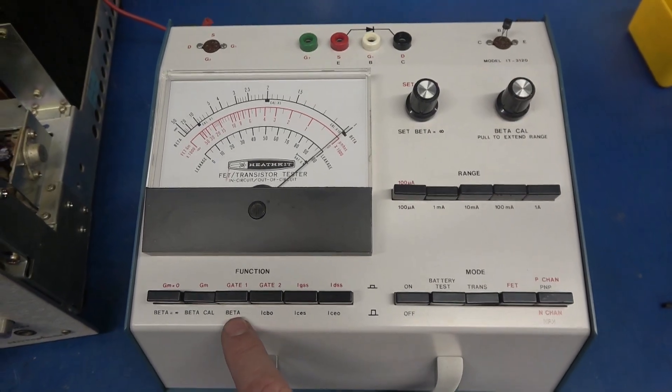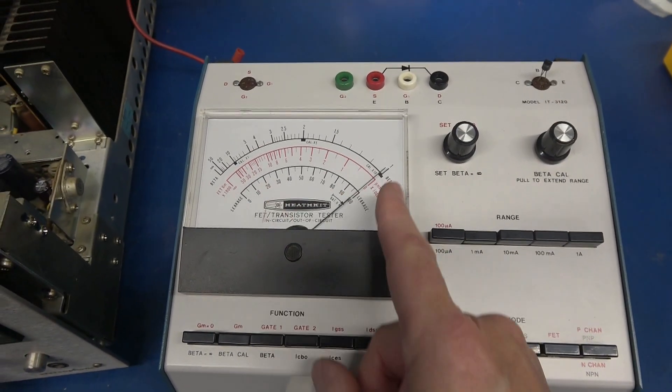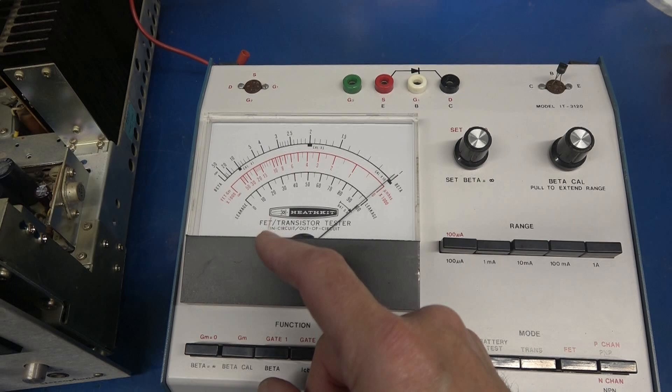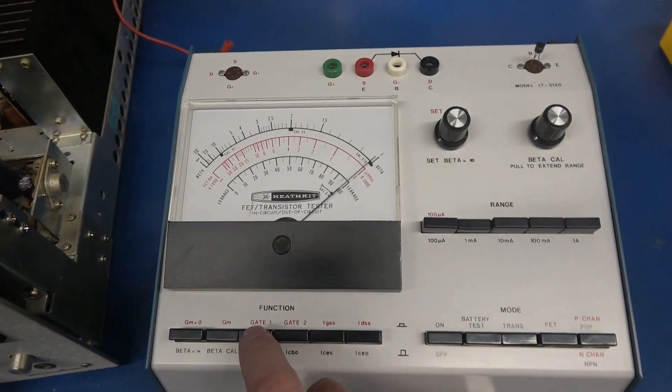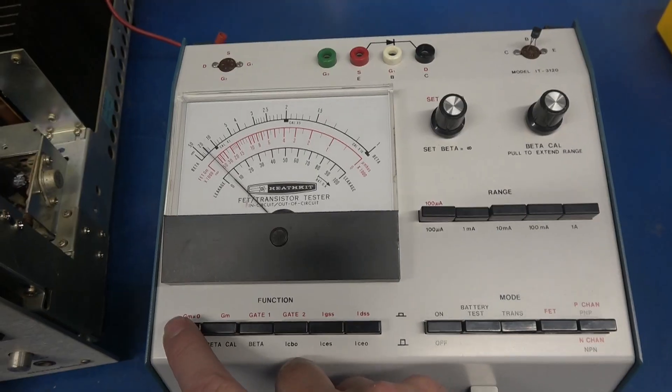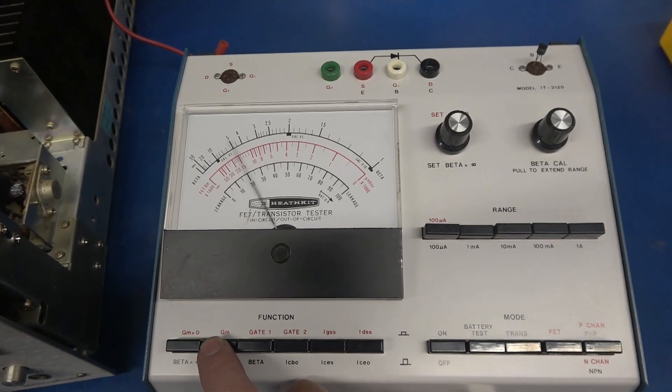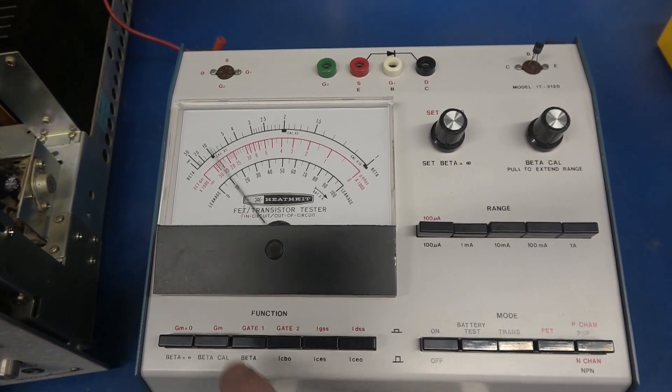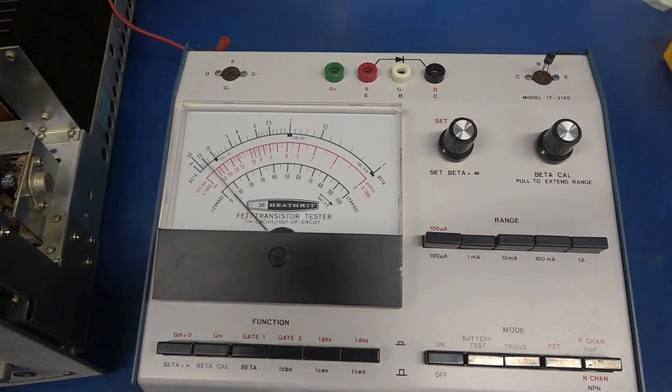Now when I hit beta, you should see the gain, so the meter should deflect to the left. I'll show you the gain of that transistor. There it is. If this transistor were bad, it would not pass that test.